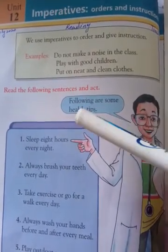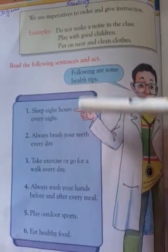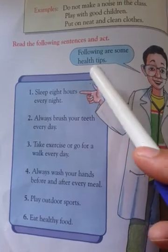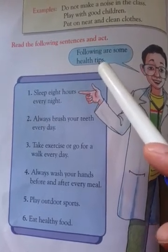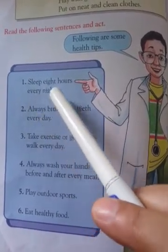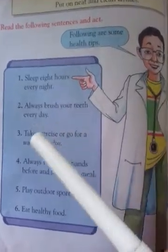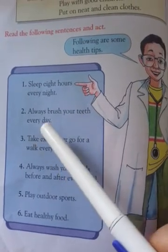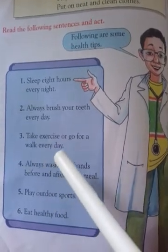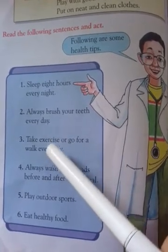Read the following sentences and act — act یعنی عمل کرنا، یعنی نیچے جو جملے دیے گئے ہیں ان کو پڑھیں اور ان پر عمل کریں. Following are some health tips — صحت کے متعلق کچھ مشورے دیے گئے ہیں. First: Sleep eight hours every night — ہر رات آٹھ گھنٹے کی نیند لیں. Always brush your teeth every day — روزانہ اپنے دانت brush سے صاف کریں.